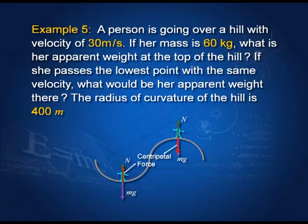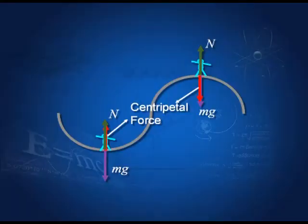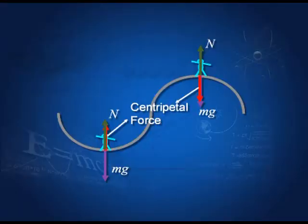A person of mass 60 kilograms is going over a hill with a velocity of 30 meters per second. What is her apparent weight at the top of the hill? If she passes the lowest point with the same velocity, what is her apparent weight there? The radius of curvature of the hill is 400 meters. At the top of the hill, the surface provides normal reaction N upwards, weight acts downwards, and centripetal force also acts downwards. At the lowest point, the reaction is upwards but the centripetal force is now also upwards.